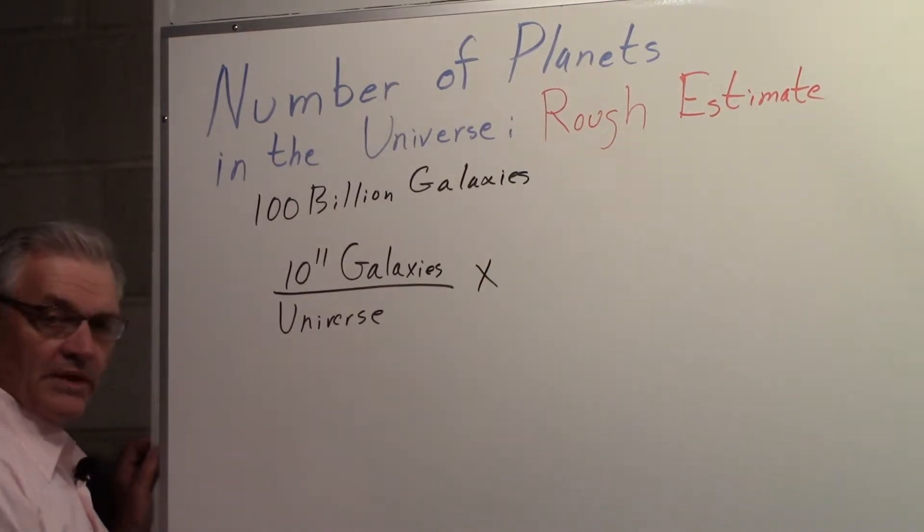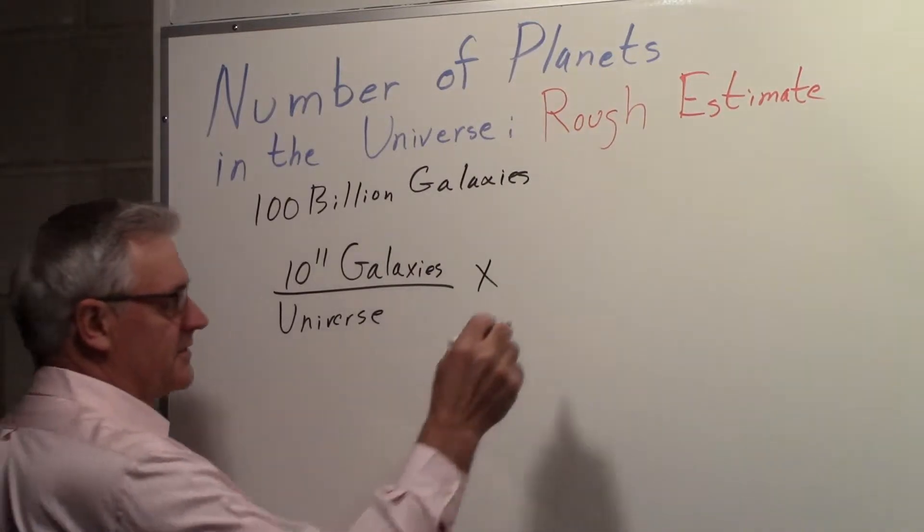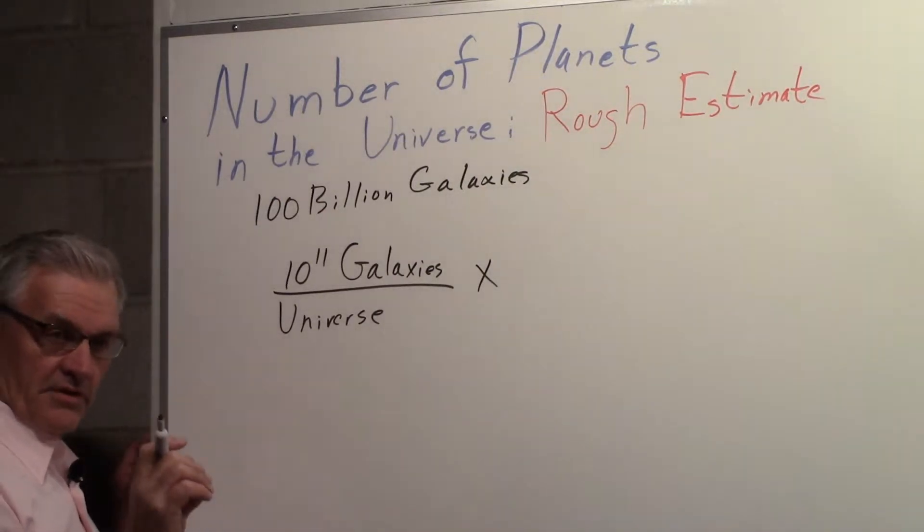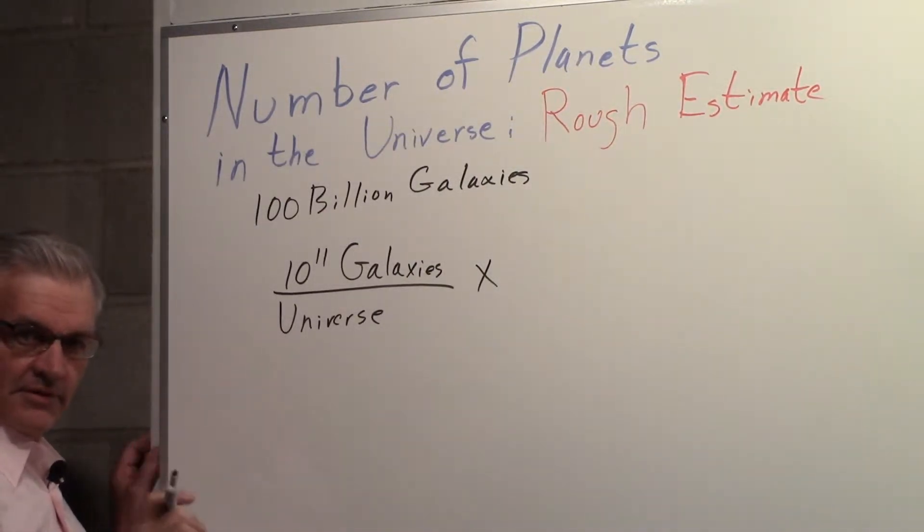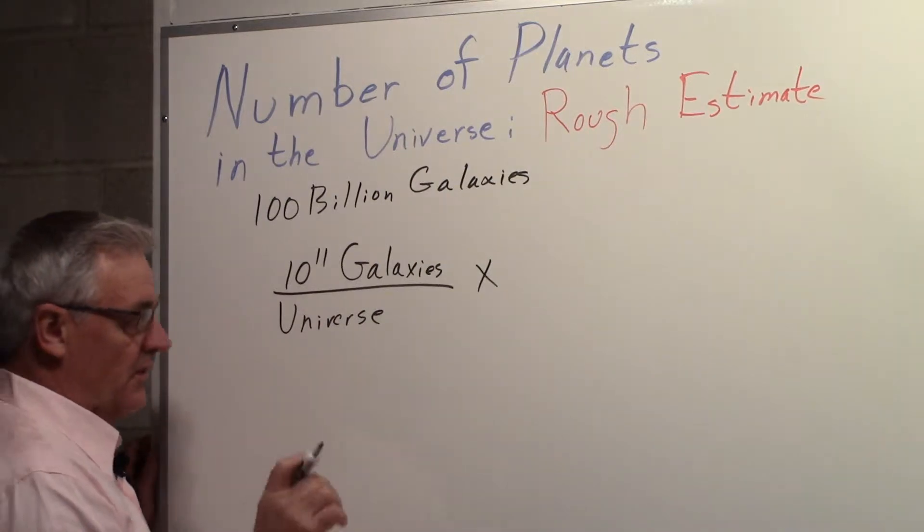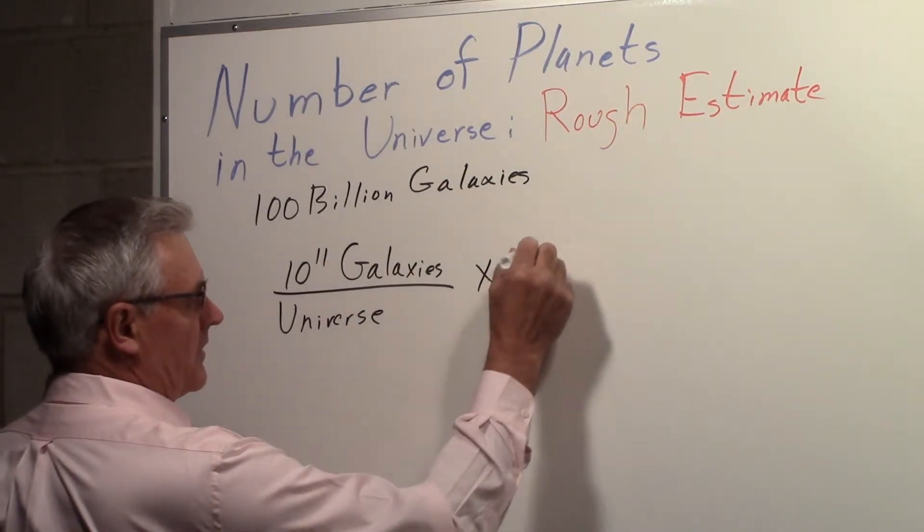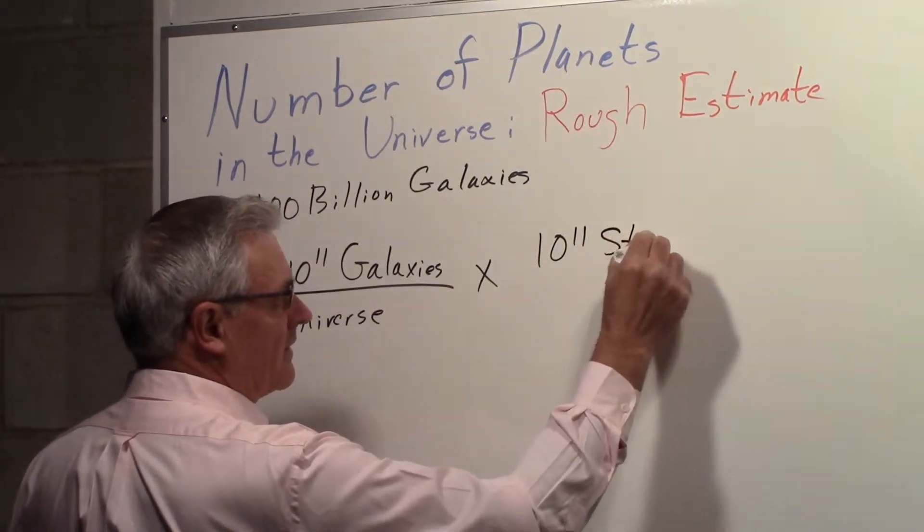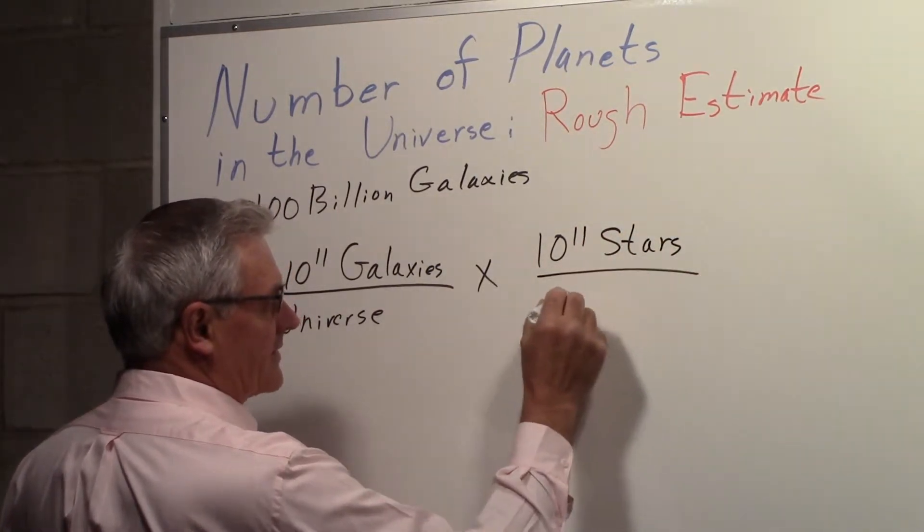The next number we need is how many stars are there in the universe? There's roughly a hundred billion stars in the galaxy. So we would have ten to the eleventh stars per galaxy.